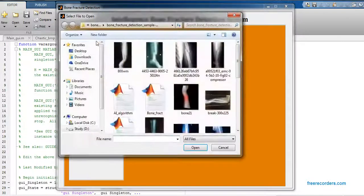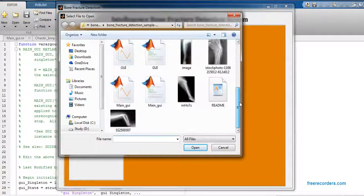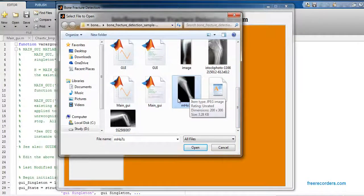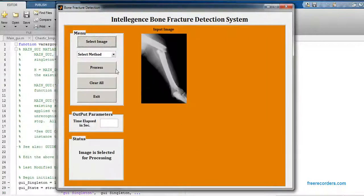Now just click this button to open current entry and select one bone image from input database. So I'm going to select this image from input database and just click on open. Now just select method, that is artificial intelligence. So basically I have mentioned only one method is there, that is artificial intelligence method. So just select that method.